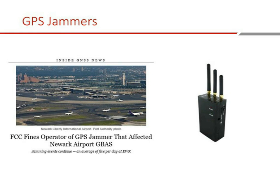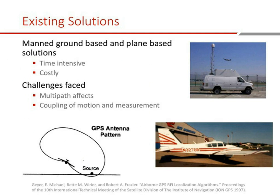Existing work on finding jammers includes manned ground-based and plane-based solutions, but they face two big problems: they're time-intensive and costly. The ground-based solution faces multipath as signals bounce between buildings around the airport, increasing complexity and search time. The plane-based solution has the challenge of coupling motion and measurement — a patch antenna on top of the airplane must bank the entire plane to detect a jammer, adding another degree of freedom to worry about.